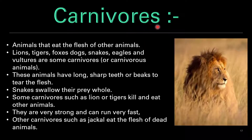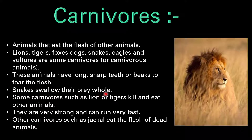Next are carnivore animals — animals that eat the flesh of other animals, like lions, tigers, foxes, dogs, snakes, eagles and vultures. These animals have long sharp teeth or beaks to tear flesh. Snakes swallow their prey whole. Some carnivores such as lions and tigers kill and eat other animals — they are very strong and can run very fast. Other carnivores such as jackals eat the flesh of dead animals.